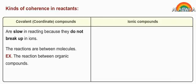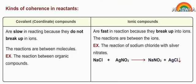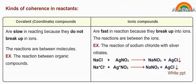Ionic compounds are fast in reaction because they break up into ions. The reactions are between the ions. Example: the reaction of sodium chloride with silver nitrate. NaCl + AgNO3 produces NaNO3 + AgCl (white precipitate). Na⁺ + Cl⁻ + Ag⁺ + NO3⁻ produces Na⁺ + NO3⁻ + AgCl (white precipitate).